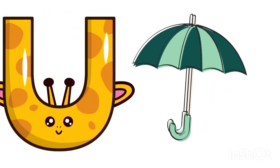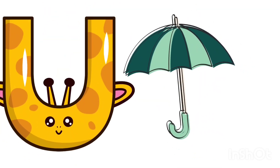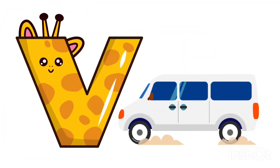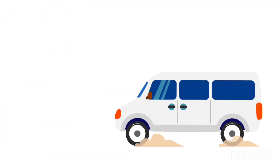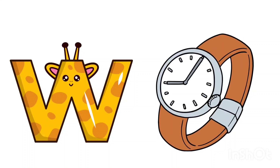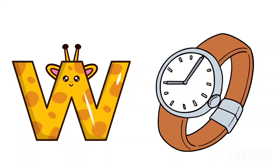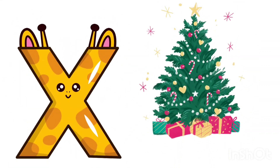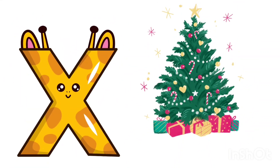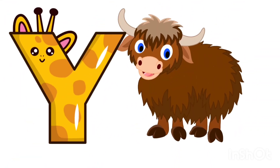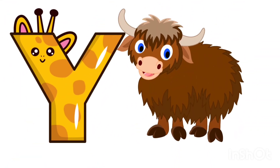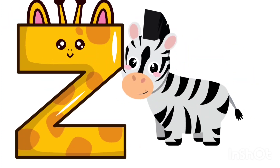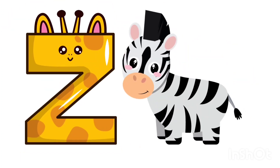V for van, W for forge, X for X must be, Y for yak, Z for zebra.